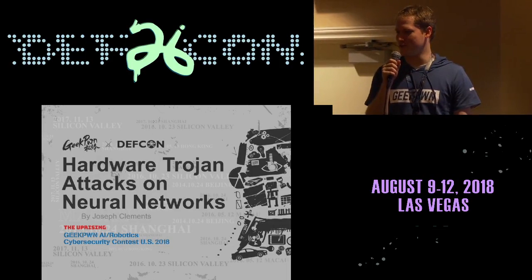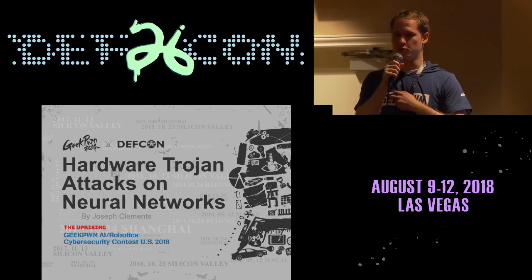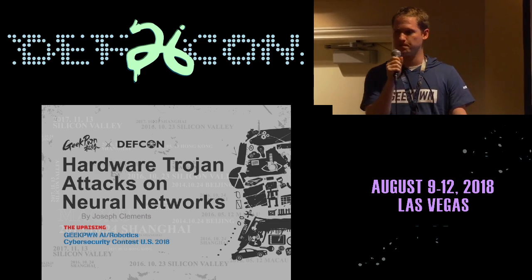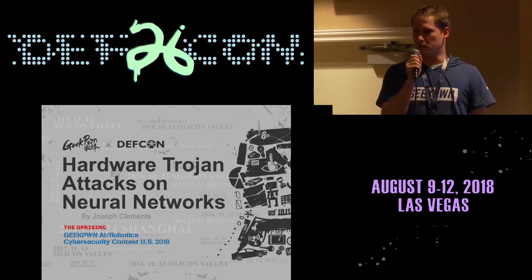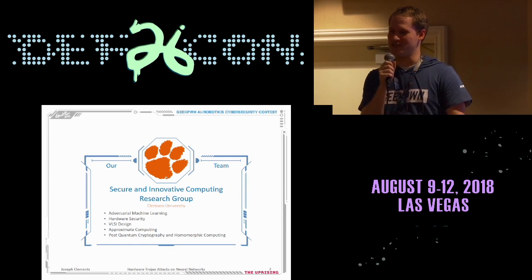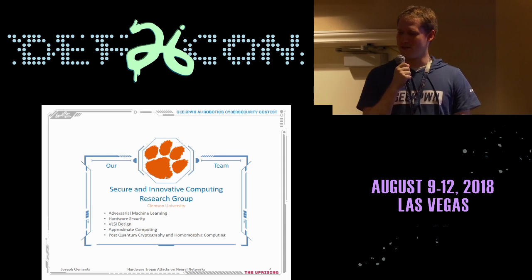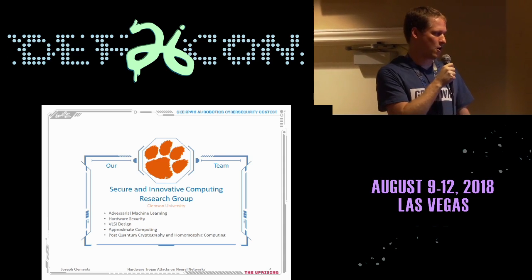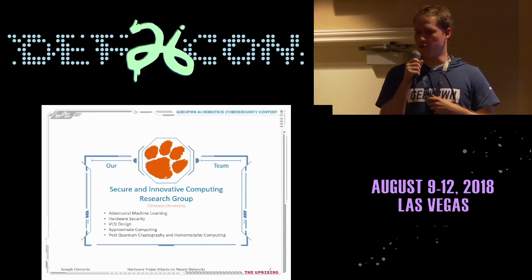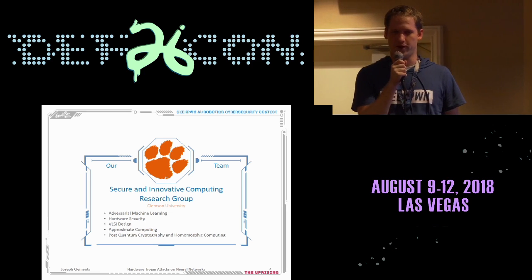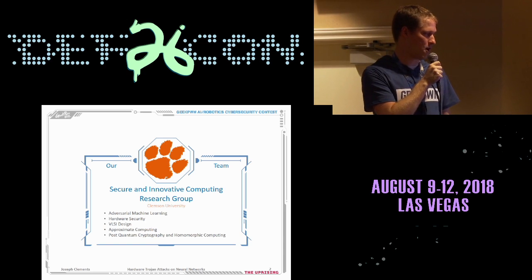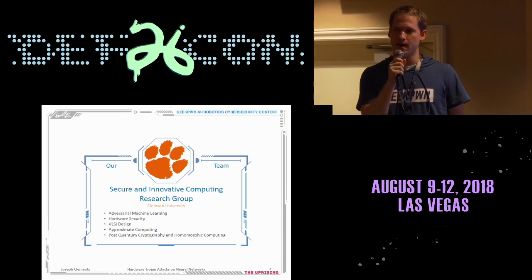Thanks again for coming and good afternoon. My name is Joseph Clements and I'm here to present my recent work published in the paper 'Hardware Trojan Attacks on Neural Networks.' I am a PhD student from Clemson University, where I work closely with my PhD advisor Dr. Ntio Lab and our research group, the Secure and Innovative Computing Research Group. My specific areas of focus are adversarial machine learning and hardware security. We also have members of our team who work on VLSI design, approximate computing, post-quantum cryptography, and homomorphic computing.